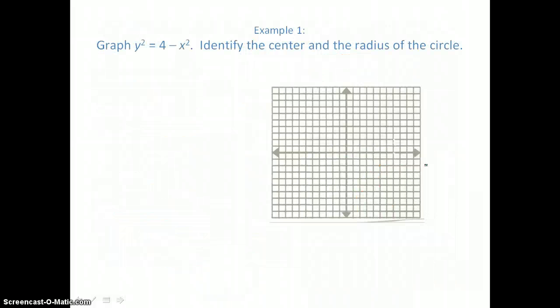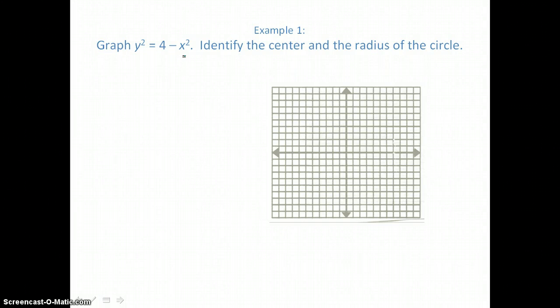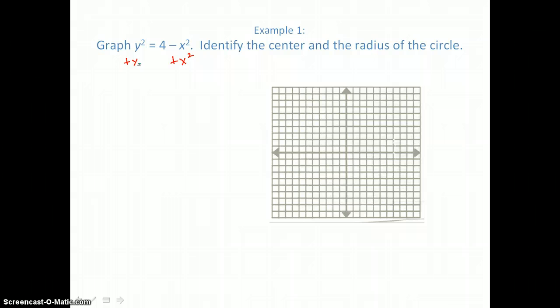In example 1, we're going to graph y squared equals 4 minus x squared and identify the center and radius. We want to put this equation in standard form. I recognize it's a circle and not a parabola because both x and y are squared. To get it in standard form, we move the x squared term to the other side, so the equation becomes x squared plus y squared equals 4.